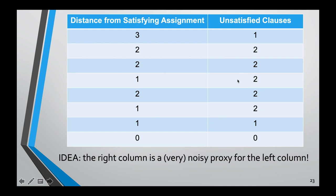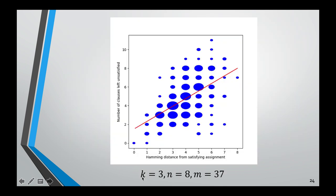Here's a slightly larger empirical example: 3 literals per clause, 8 variables, 37 clauses. A scatterplot of all assignments shows the number of clauses left unsatisfied versus the Hamming distance from the satisfying assignment. There is a pretty clear positive correlation: assignments closer to the satisfying assignment tend to satisfy more clauses. So the number of unsatisfied clauses is actually a pretty good proxy — better than nothing — for your distance from the satisfying assignment.